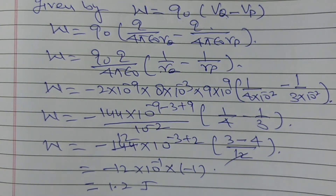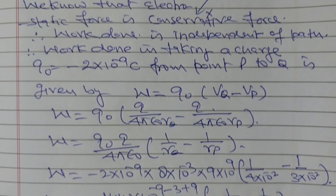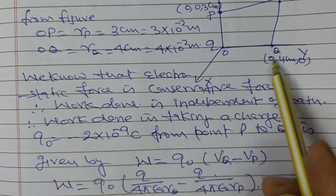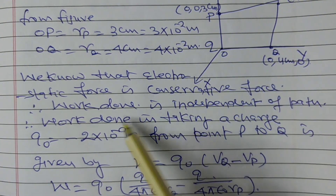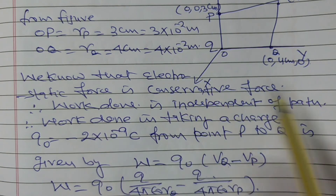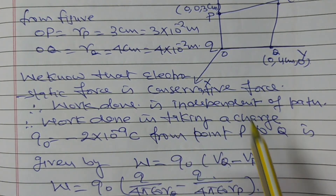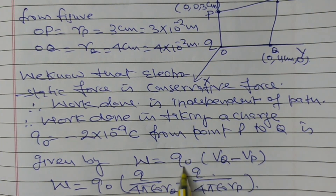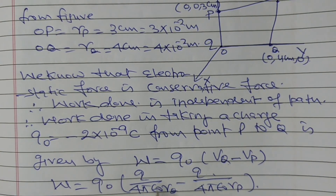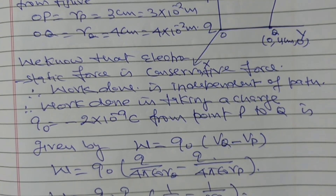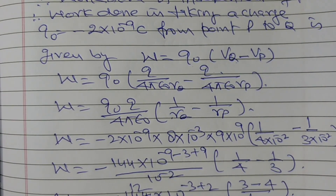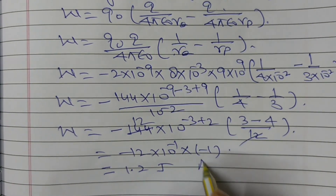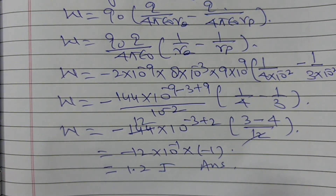So the work done in taking a charge Q naught equal to minus 2 into 10 to the power minus 9 coulomb from point P to Q via R is 1.2 Joule. Since electric force is a conservative force, the work done is independent of the path, and is given by charge into potential difference, where potential is KQ over R. Therefore, the answer to this question is 1.2 Joule. Thank you.